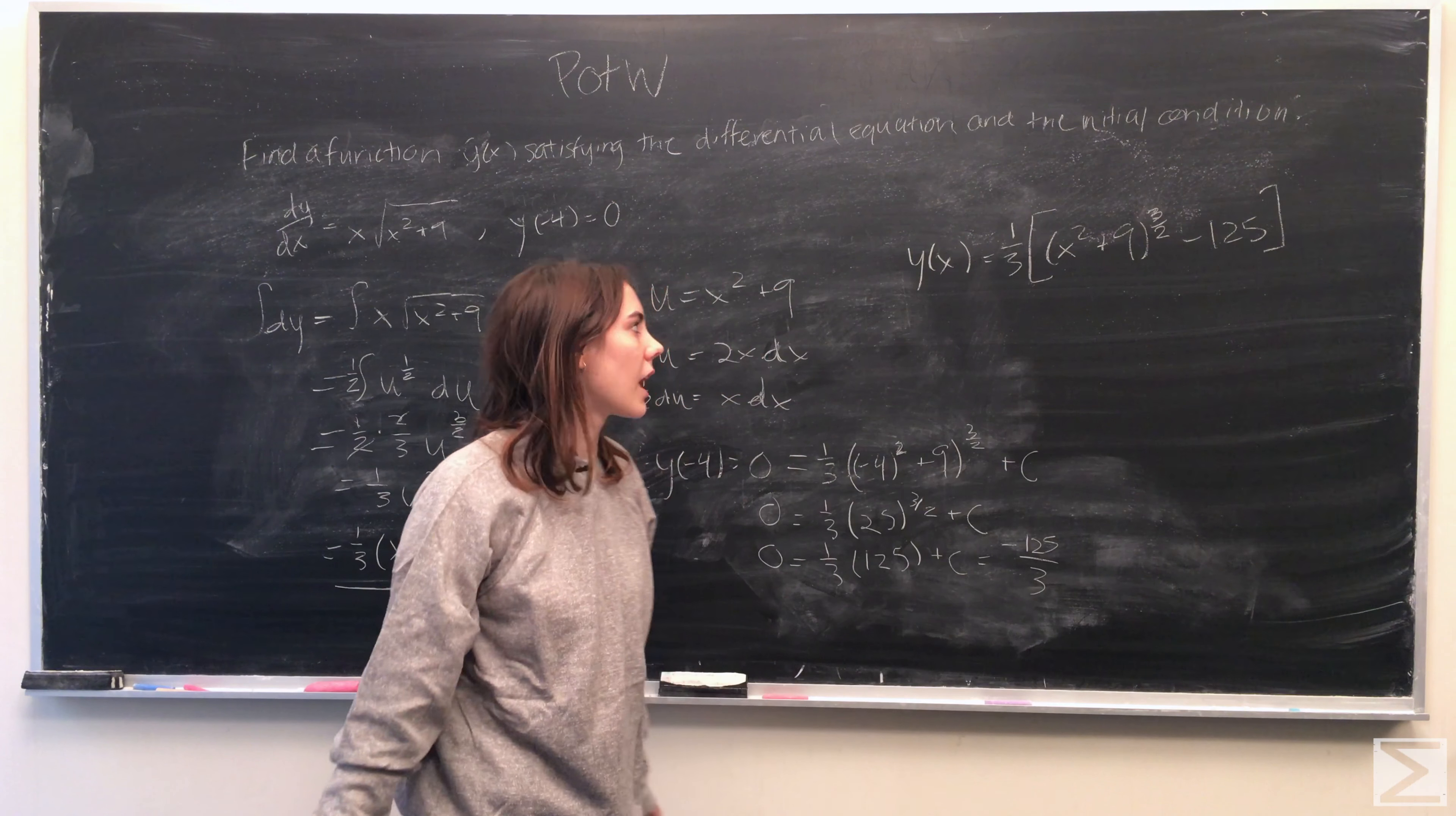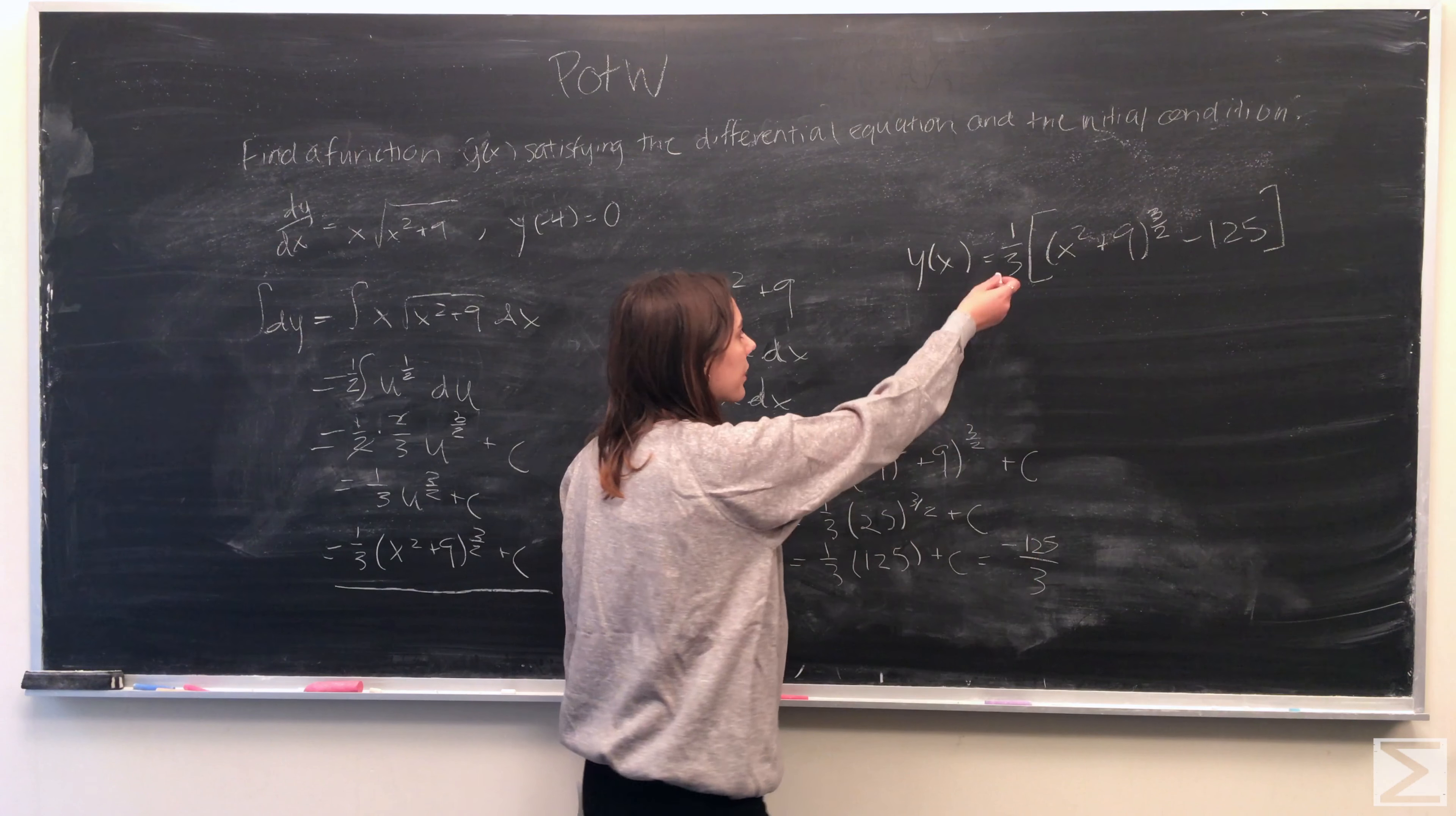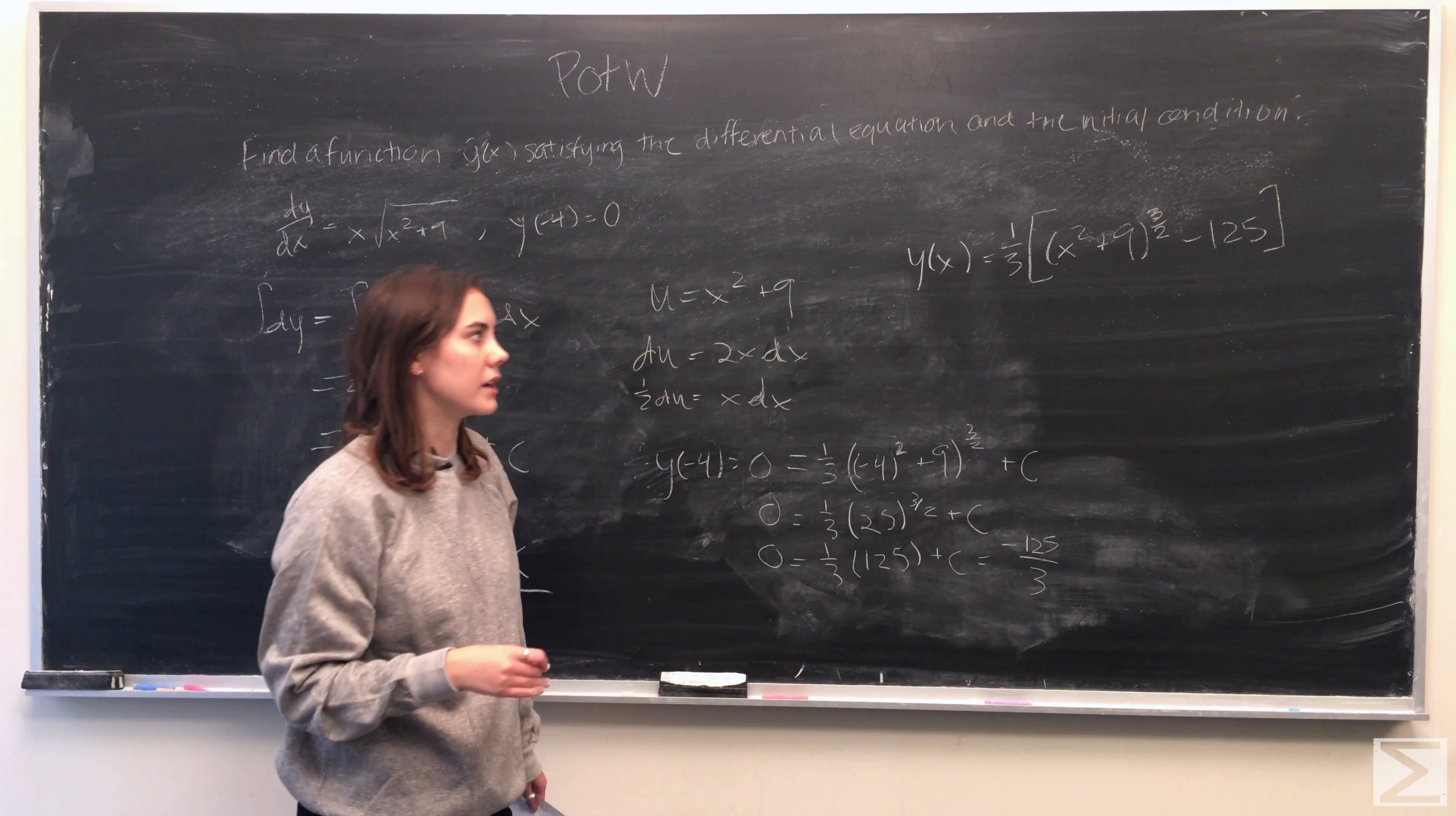So pulling the 1 third out, what we're left with is that y of x is equal to 1 third times x squared plus 9 to the 3 over 2 minus 125.